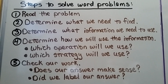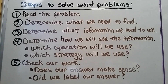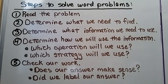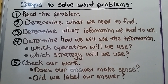There are a few steps we need to follow to solve word problems. First, we read the problem. Then we determine what we need to find and what information we need to use. Then we determine how we will use the information — which operation and which strategy will we use? Lastly, we check our work: does our answer make sense, and did we label our answer?